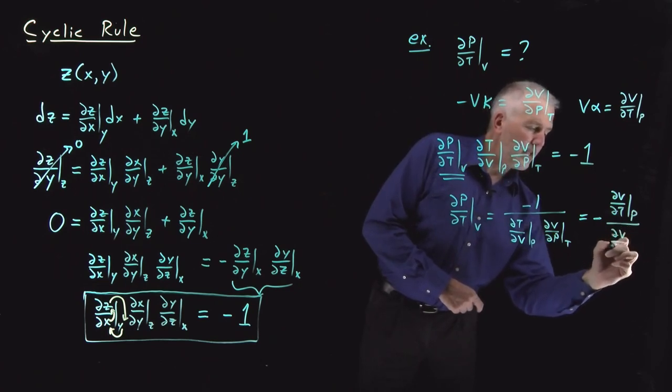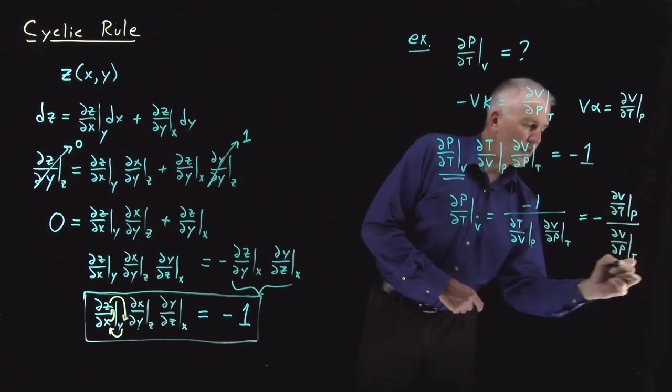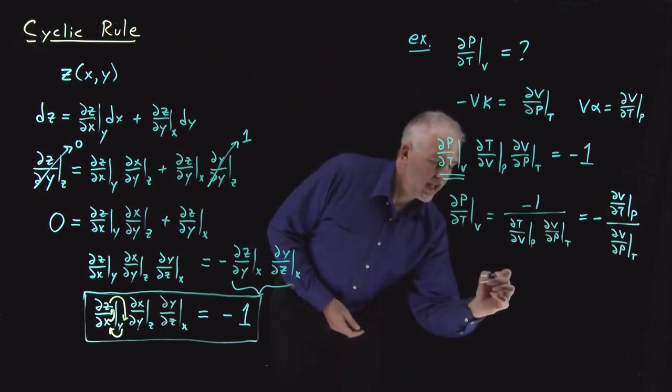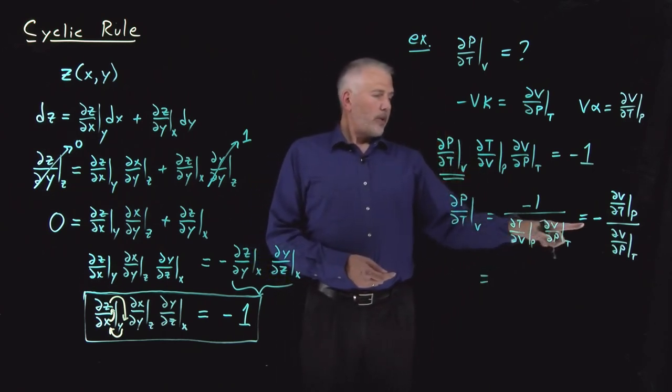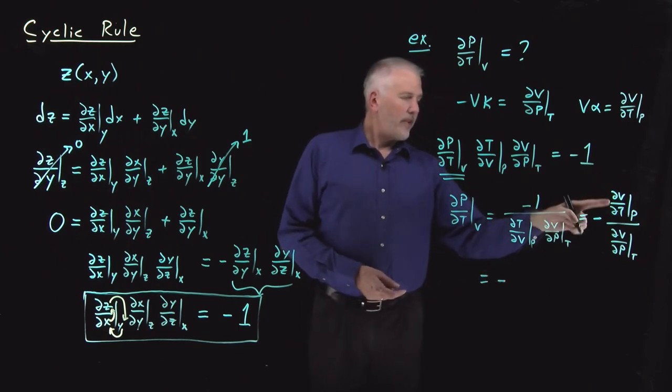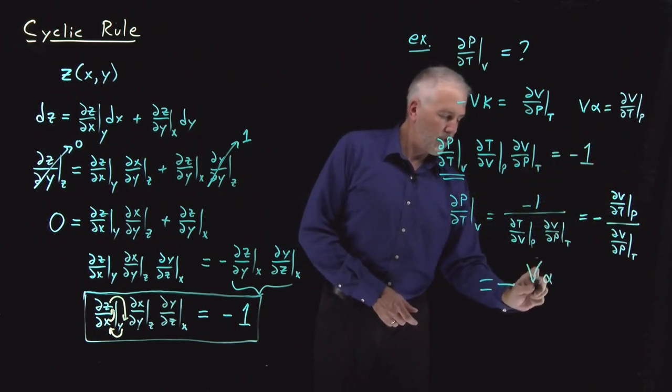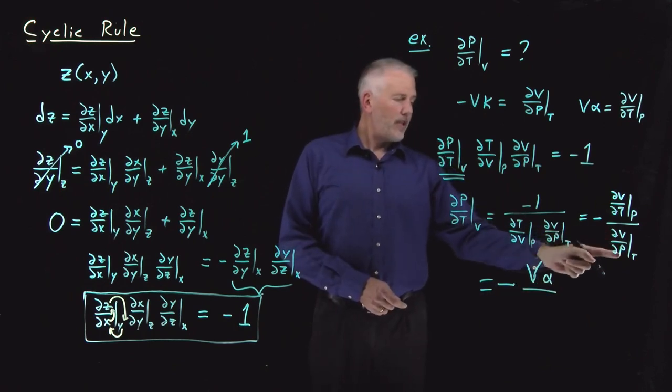∂V/∂p at constant T in the denominator, and now we can say that that's equal to ∂V/∂T at constant p, that's this term, V α.